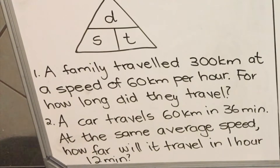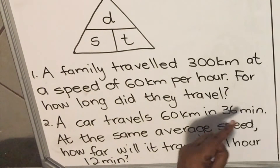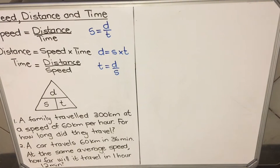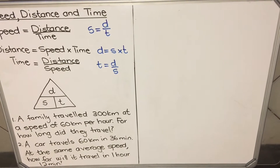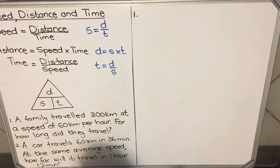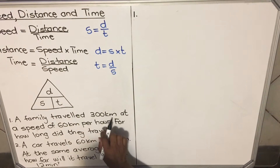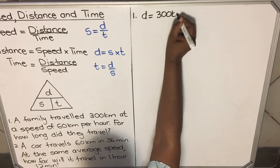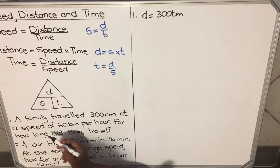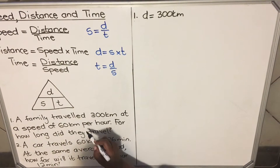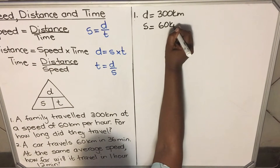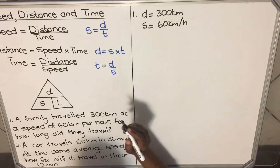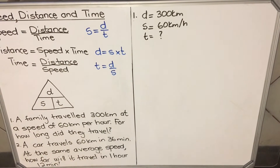Let's use an example. The first example says: a family travels 300 kilometers at a speed of 60 kilometers per hour — for how long did they travel? When you get this question, you need to write what you are given and what you are asked. The family traveled 300 kilometers, so distance = 300 km. At a speed of 60 km/h, so speed = 60 km/h. For how long — how long is time, so the question is asking me to find time.